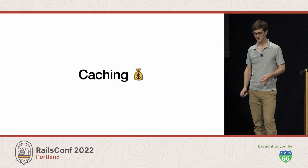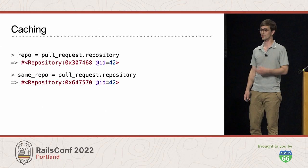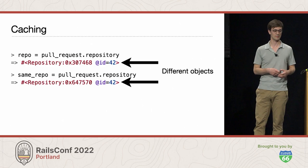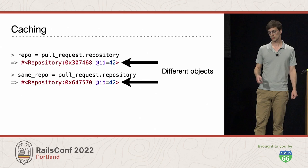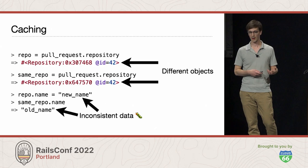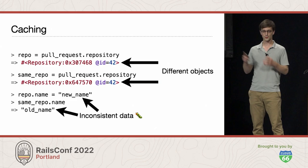Now we add on a caching feature. Currently, without caching, if I call the repository reader method twice in a row, I get different objects each time. Having multiple copies of the same repository object in memory is inefficient and can result in inconsistent data. For example, if I change the name of one copy of this repository, the other copy in memory won't reflect that change, and I end up with inconsistent data. If I then render the repository name on a page somewhere, I'm going to get different results depending on which copy I use, and this sort of thing can lead to subtle and confusing bugs.